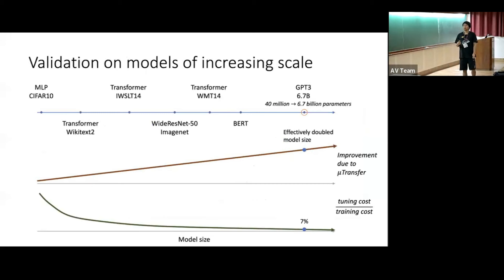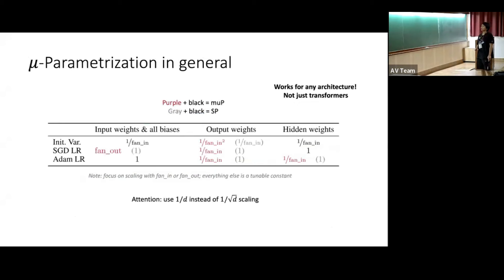On real models of a variety of scales and types, compared to manually tuning the model, the improvement due to μP transfer increases with model size, and the cost of using μP transfer decreases to zero with model size. So essentially it's a free lunch for large enough models.